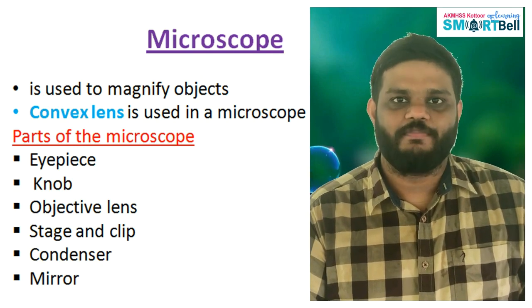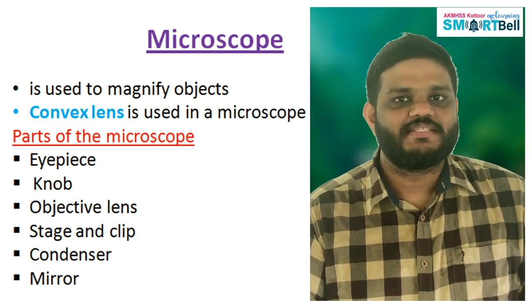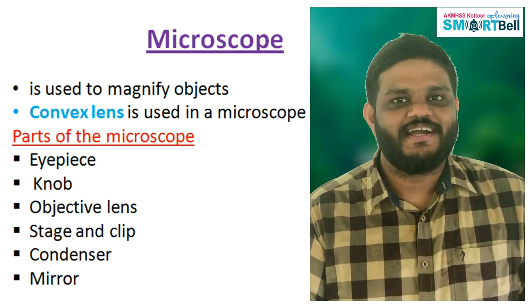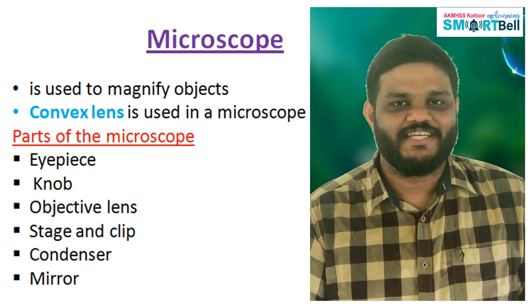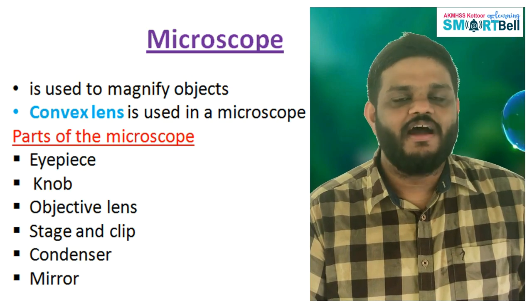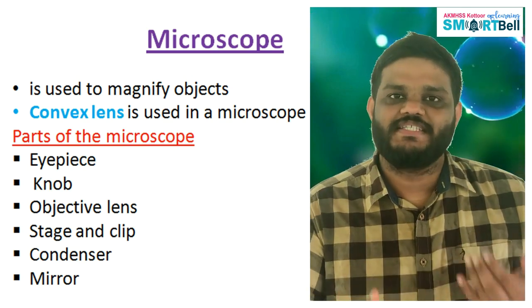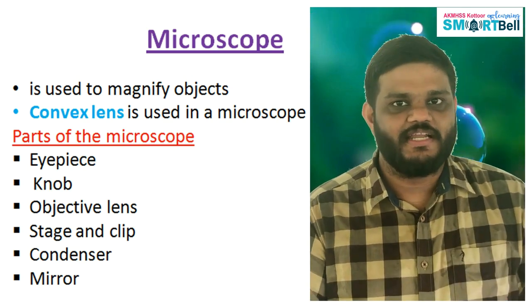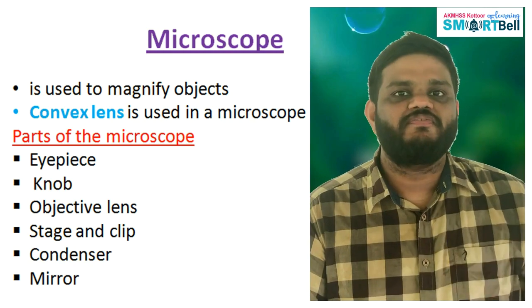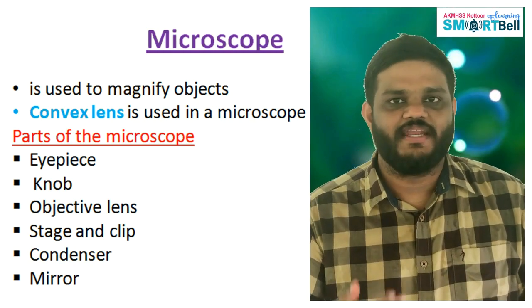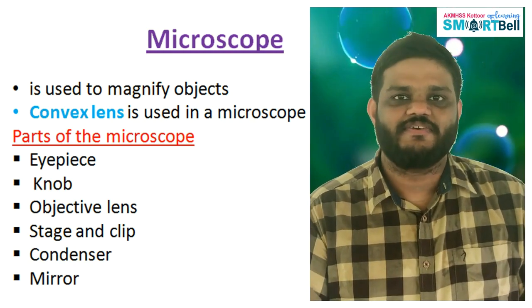The first part is the eyepiece. The second one is the knob. The third one is the objective lens. The fourth one is the stage and clips. The fifth one is the condenser. And finally, the sixth one is the mirror.